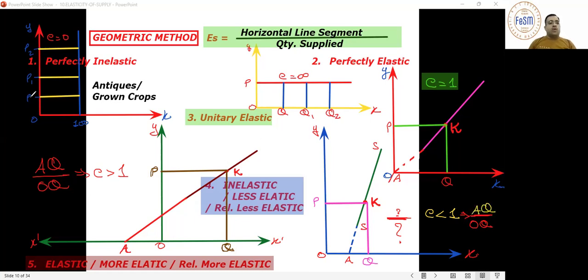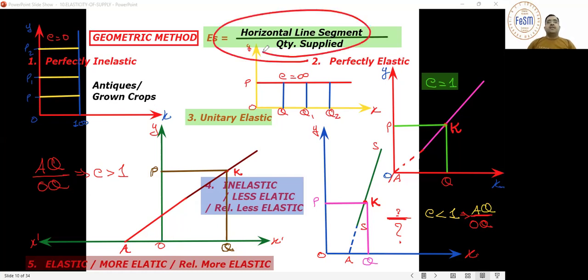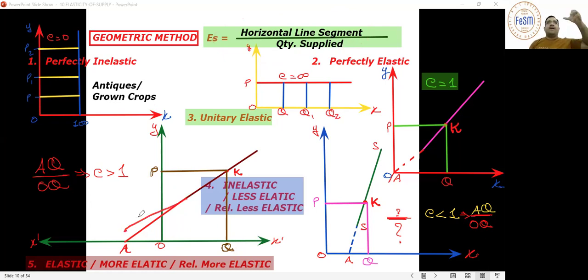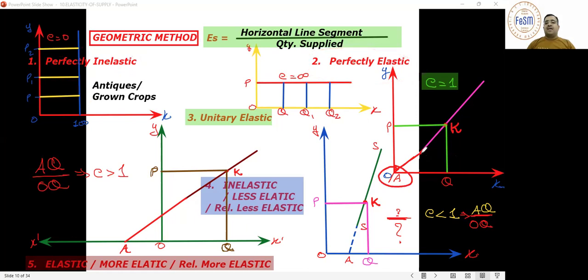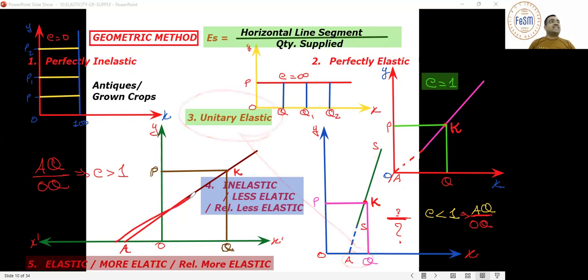Quantity supplied will always remain in the denominator. This geometric method has a derivation in ISC books. In the next lecture, we will study the factors affecting elasticity of supply.